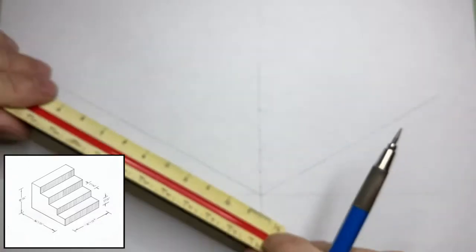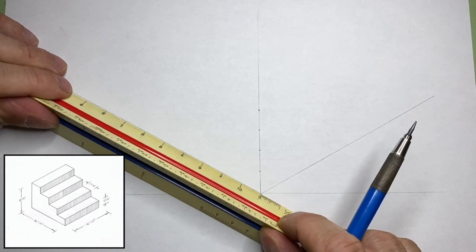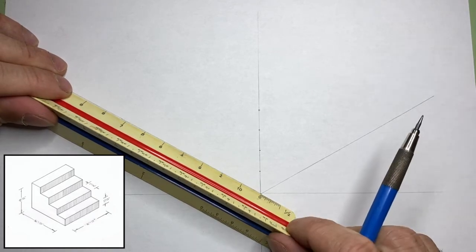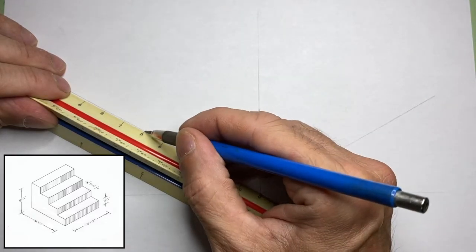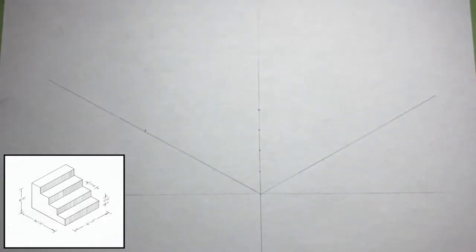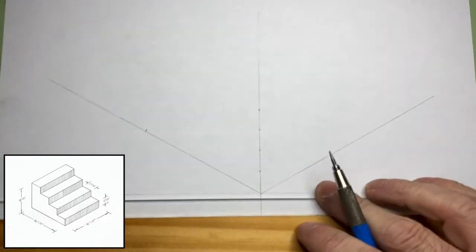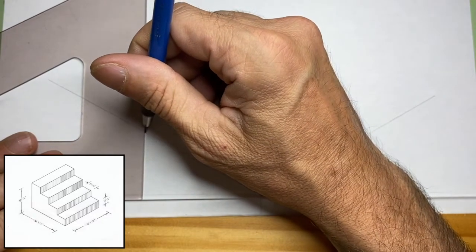Now I'll determine the depth of the stair unit. In this case it'll be six feet. Now I'll use my t-square and my triangle and I'll draw a vertical line at the six foot mark.